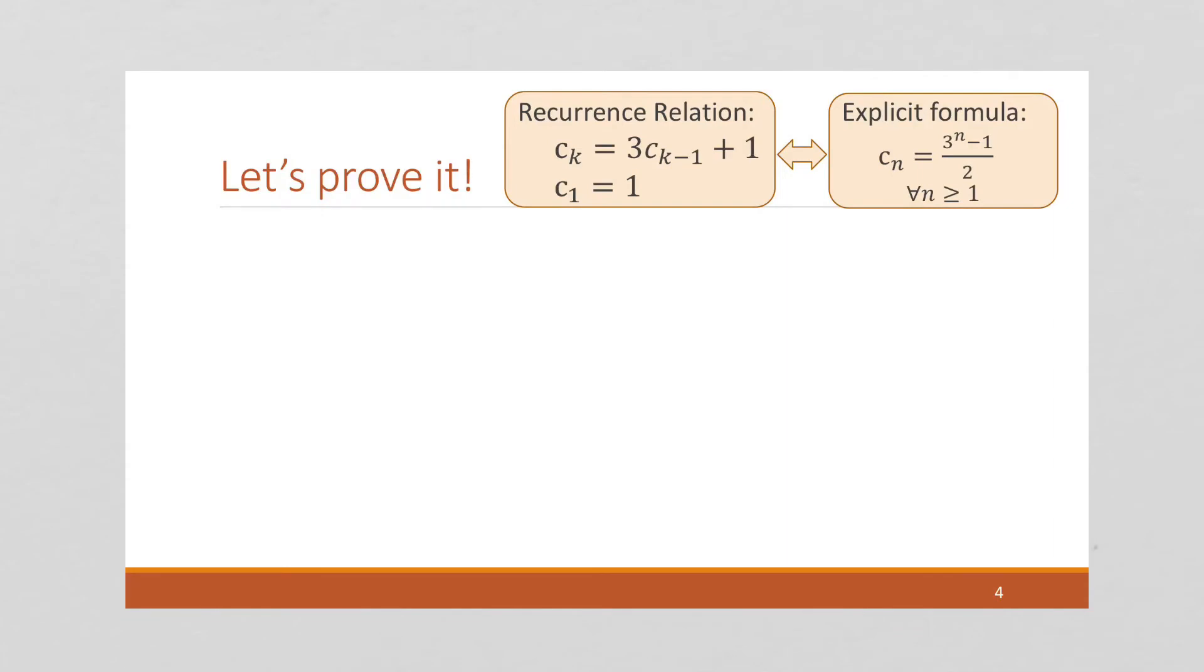Now we're going to work on the inductive step. And this is where the fact that this recurrence relation is sort of given as truth comes into effect. Because we're going to suppose that our explicit formula works for the recurrence relation, not the other way around.